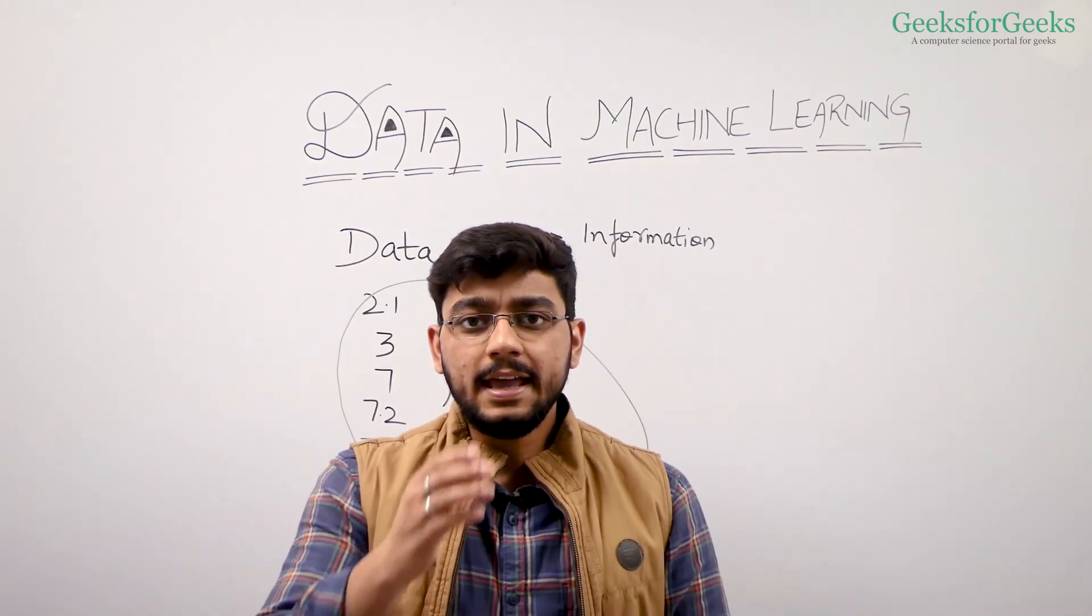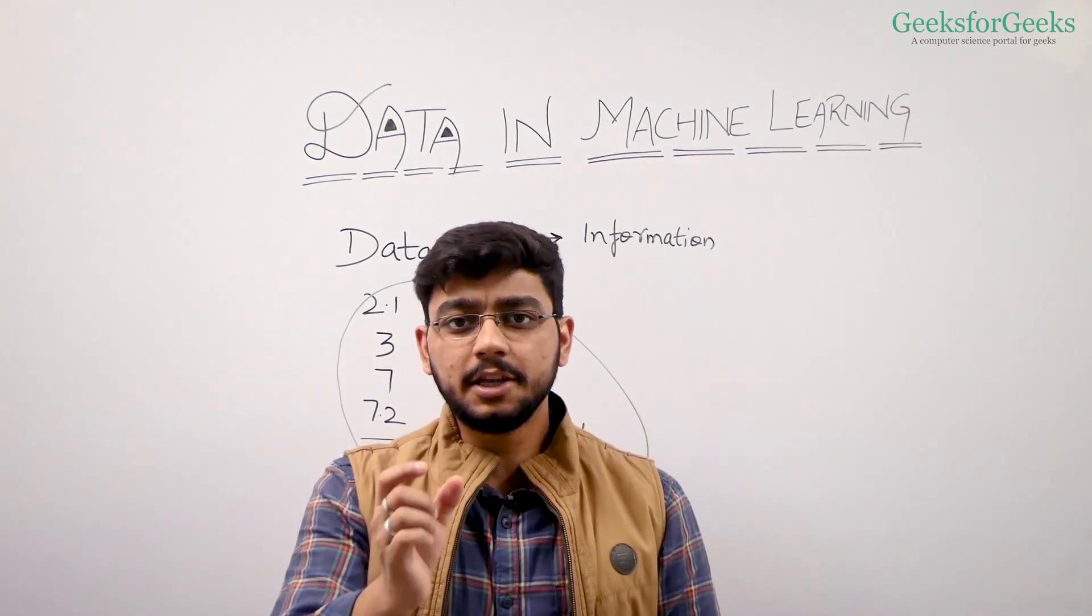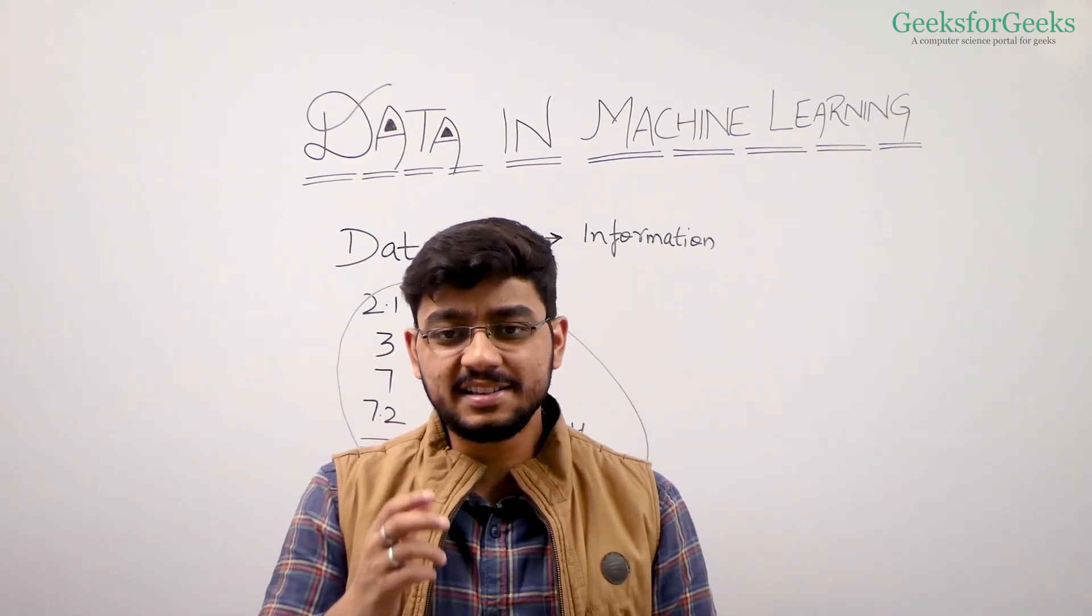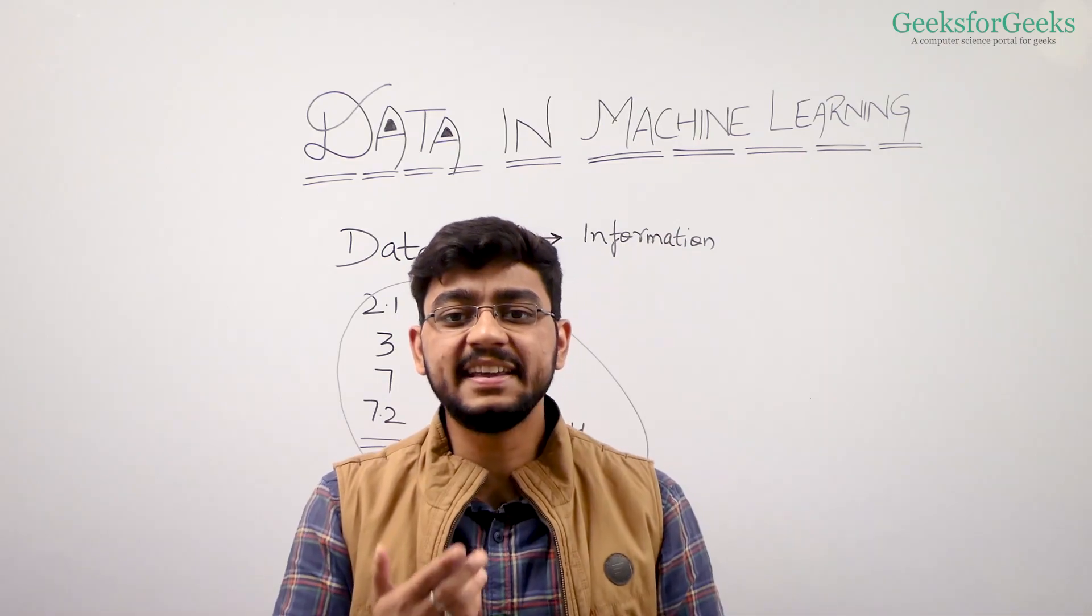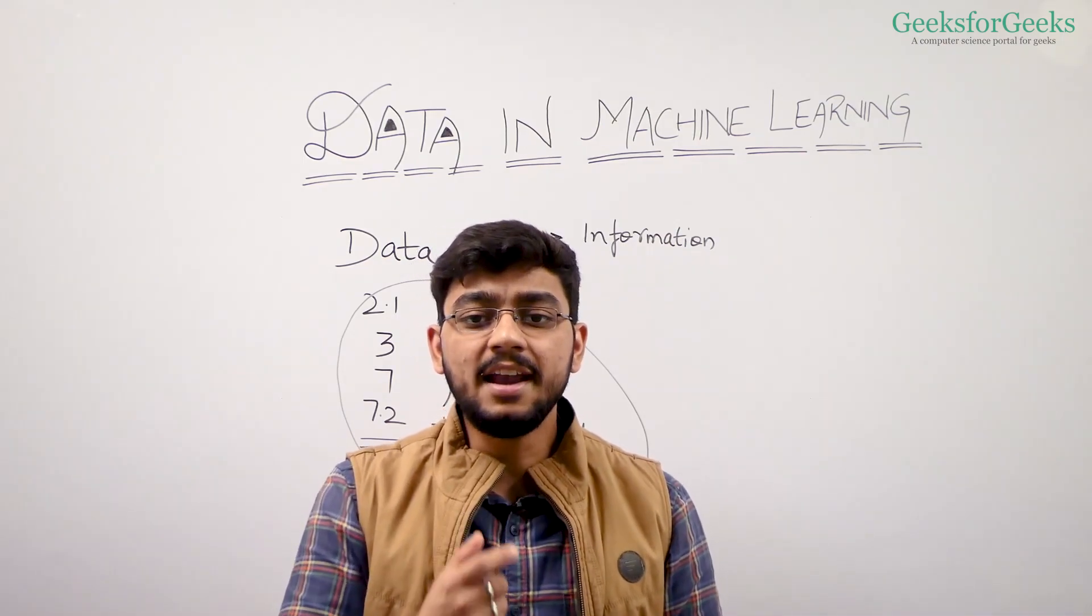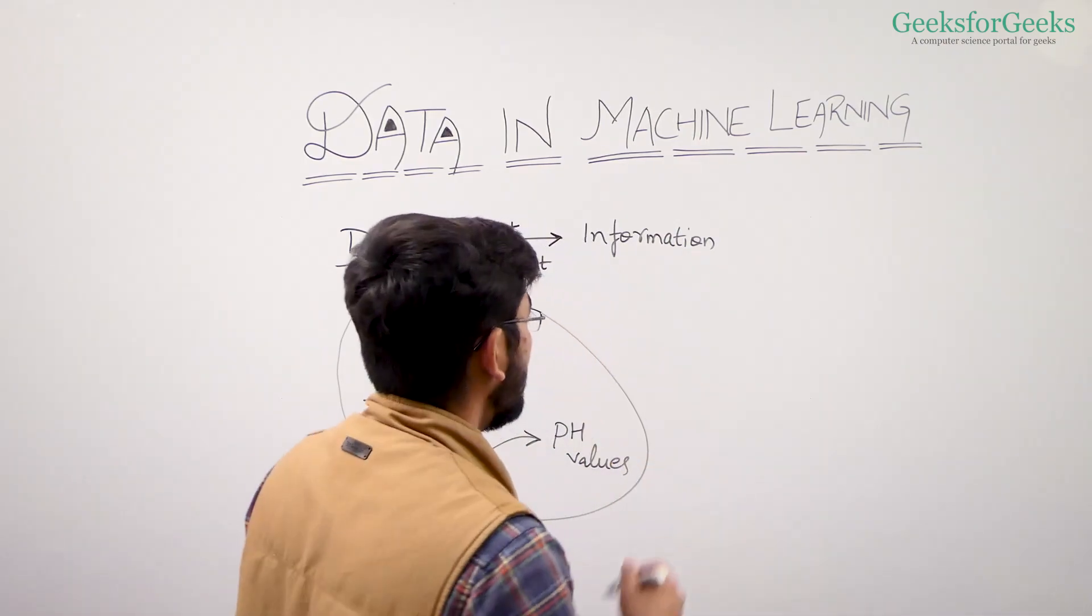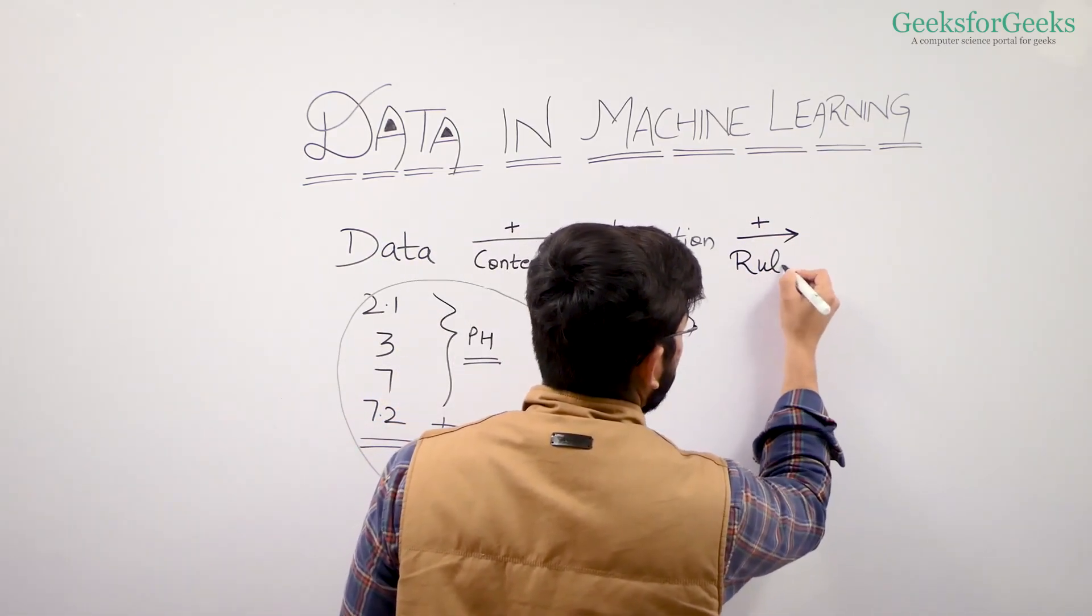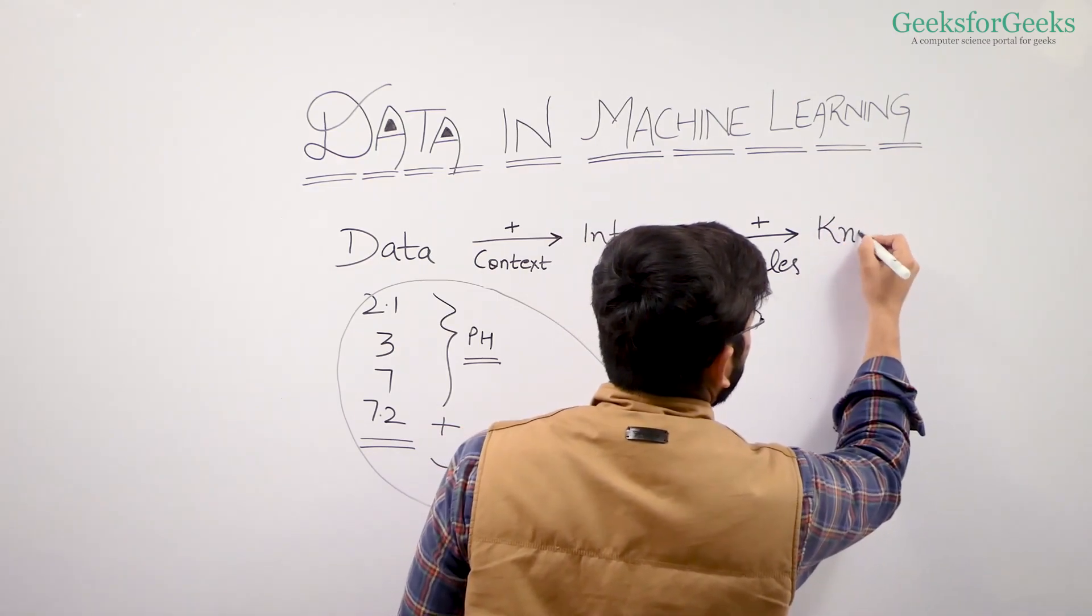Now, moving on to knowledge. Information plus certain rules gives us knowledge. So knowledge is understanding, explanation, insight, intuition, and contextualized information. Information plus rules is knowledge.